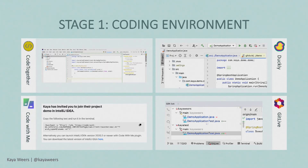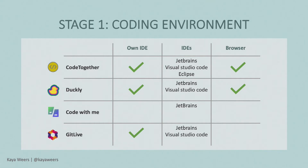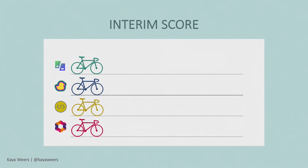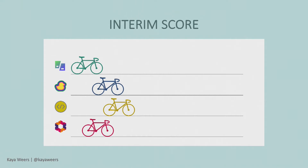Stage one is about the coding environment. The host is always working in their own IDE if it's supported. For Code Together and Duckly, participants can work in their own IDE or in the browser. For GitLive they work in their own IDE. For Code With Me, you can only work in the IntelliJ Client, even if you have IntelliJ yourself. Code Together has the most IDE support, all tools support IntelliJ, and Code Together and Duckly have the browser option — so Code Together wins this stage.